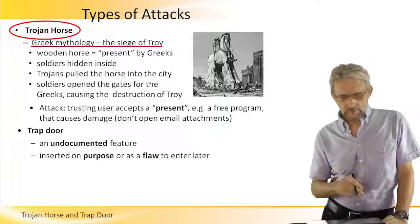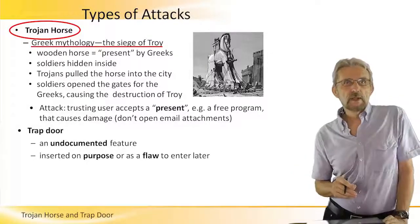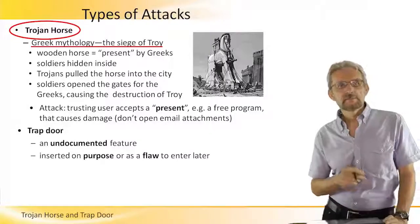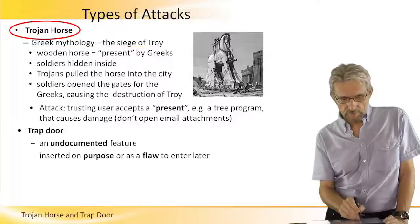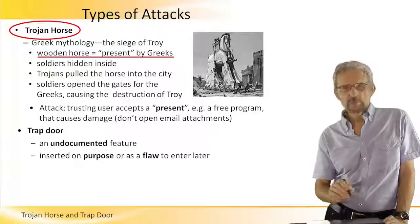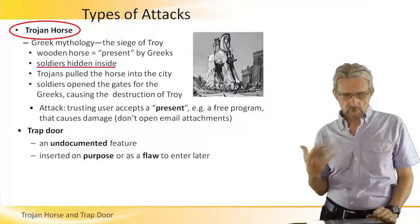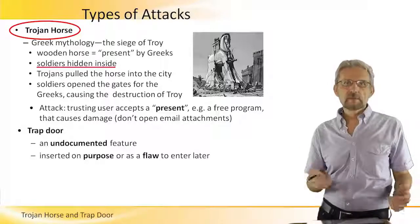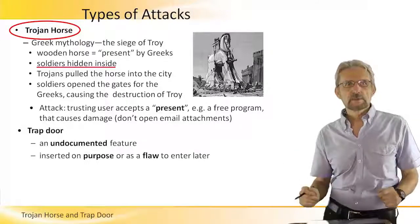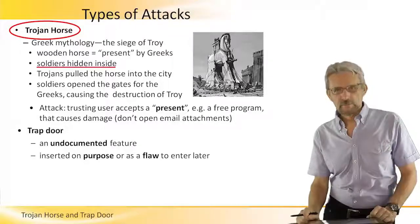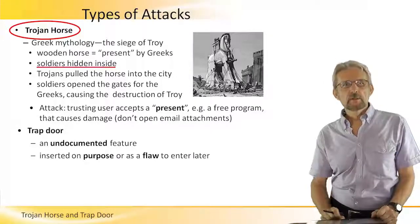The idea was that the Greeks were besieging the city and couldn't get inside for many, many years. So they played a trick — they presented a wooden horse to the Trojans which actually contained soldiers inside. The Trojans, assuming this was a gift of surrender, pulled in the horse, and at night the soldiers popped out of the statue and opened the doors.